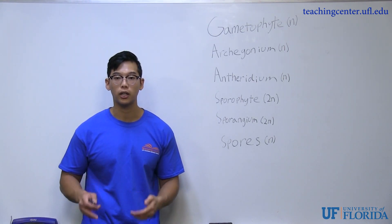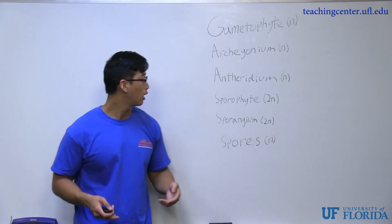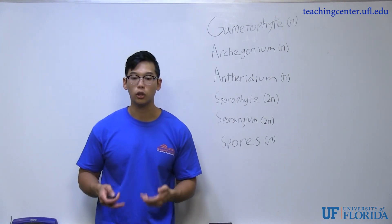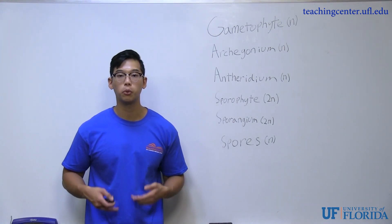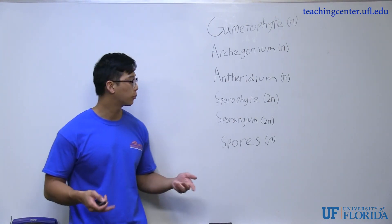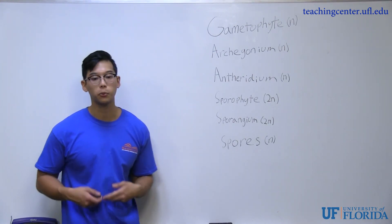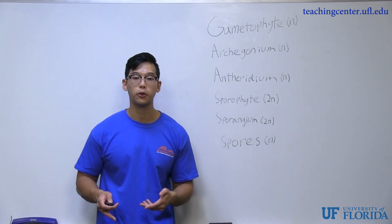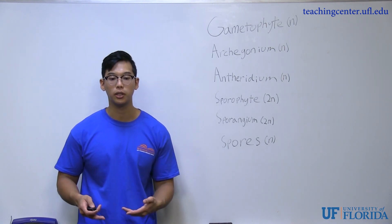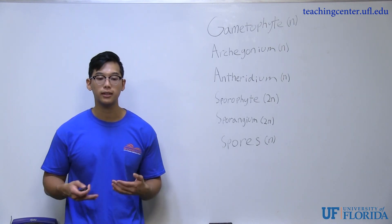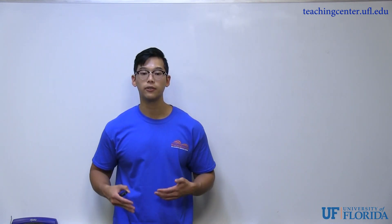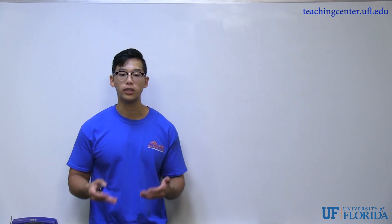The sporophyte is the diploid adult that houses the sporangium. The sporangium is the enclosure that produces spores. A spore is a haploid cell that is formed by the sporangium and germinates into the gametophyte.